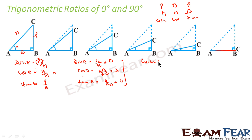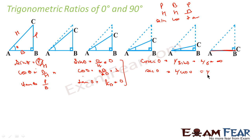Cosec 0 is nothing but 1 by sin 0, and that is 1 by 0, which is undefined. Similarly, sec 0 is nothing but 1 by cos 0. Cos 0 is 1, so this is 1 by 1, that is 1. Similarly, cot 0 is undefined. So we have got all the trigonometric ratios for 0 degree.